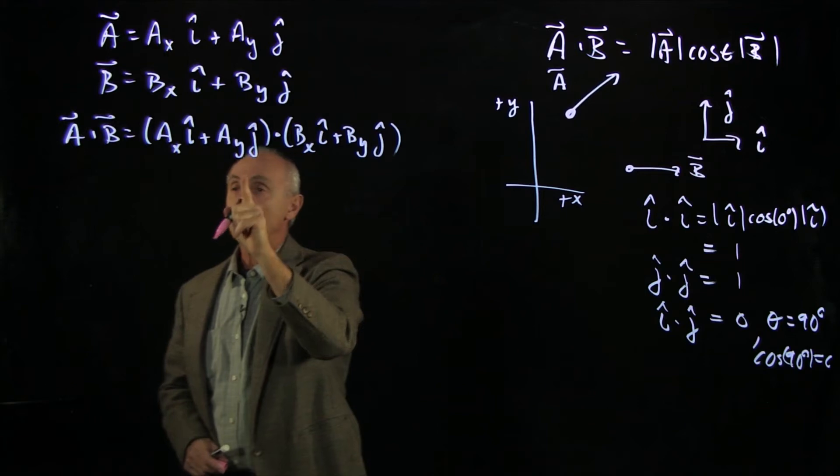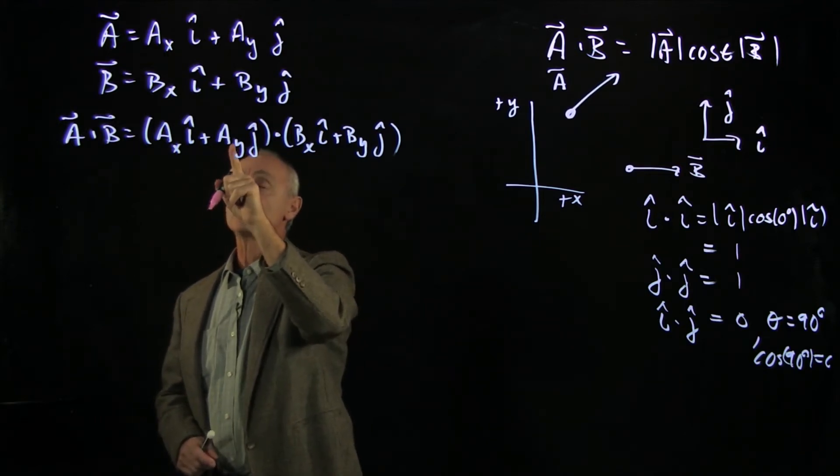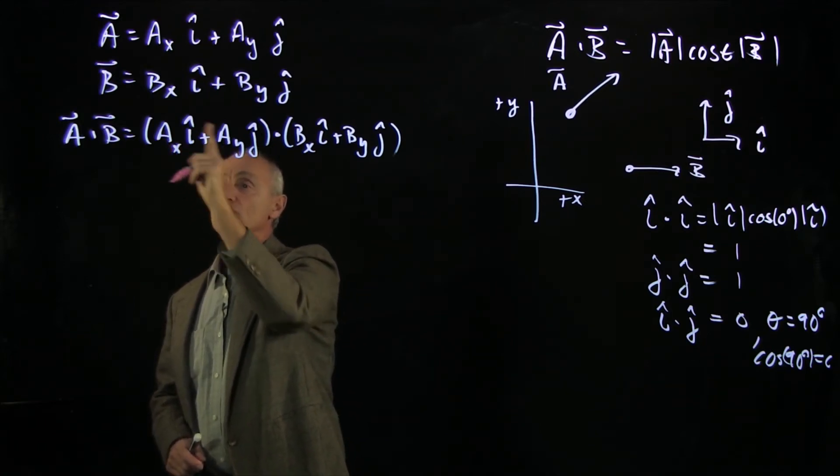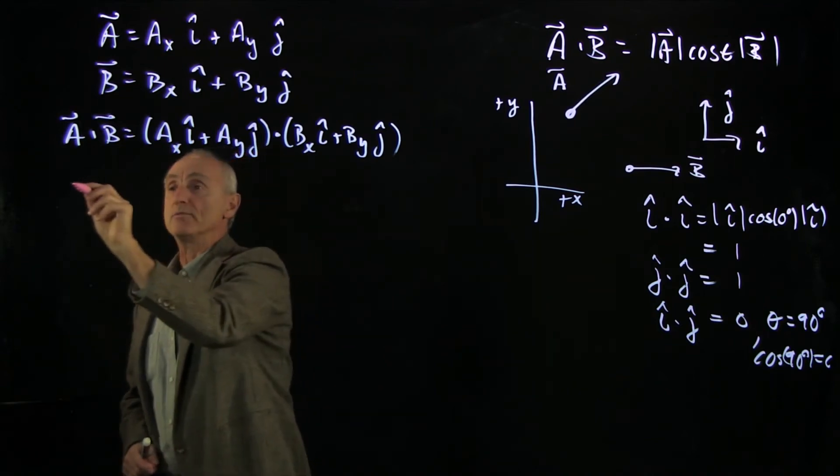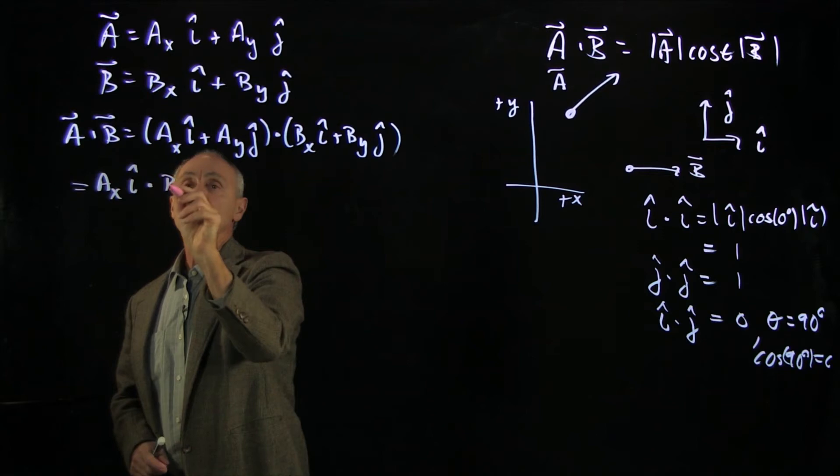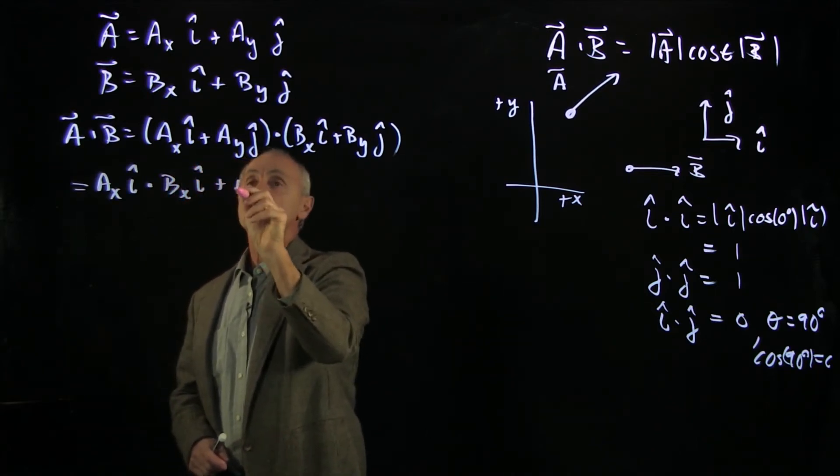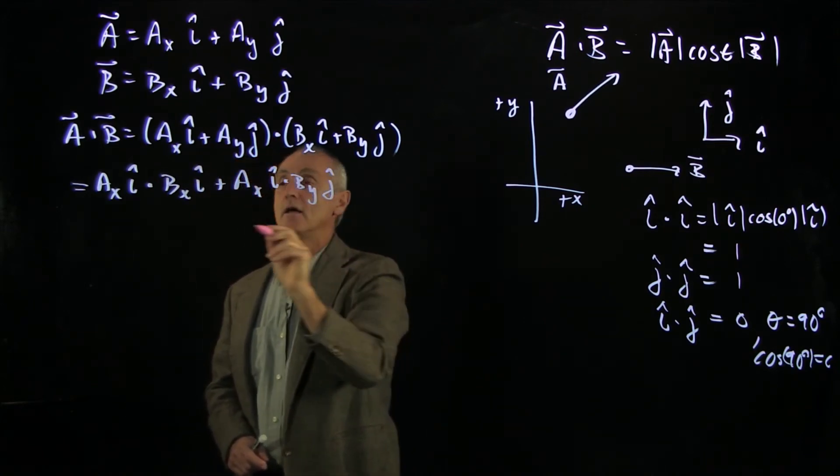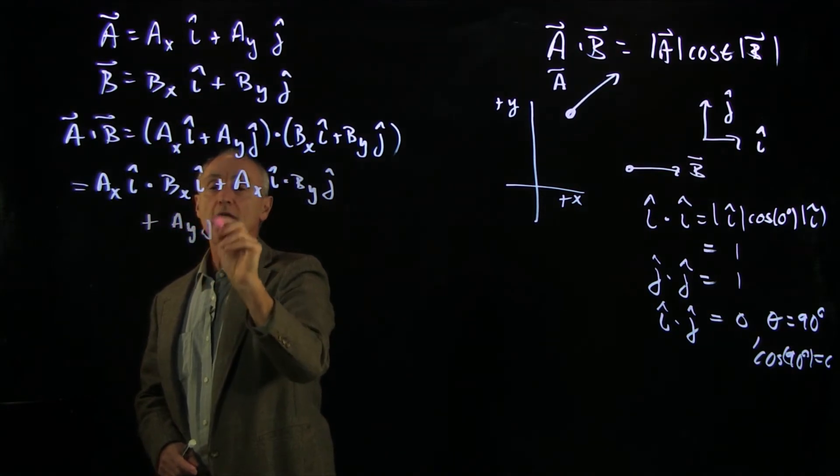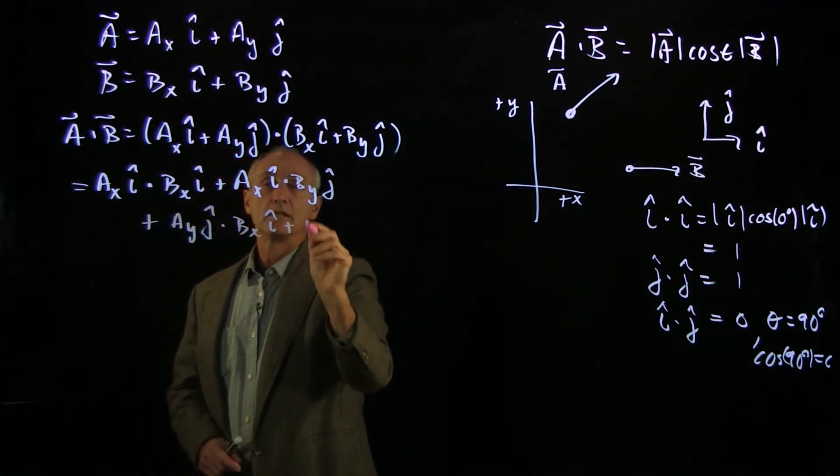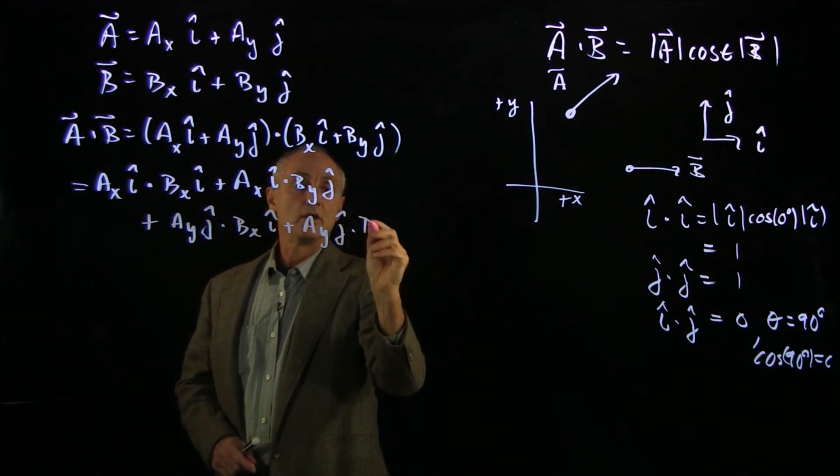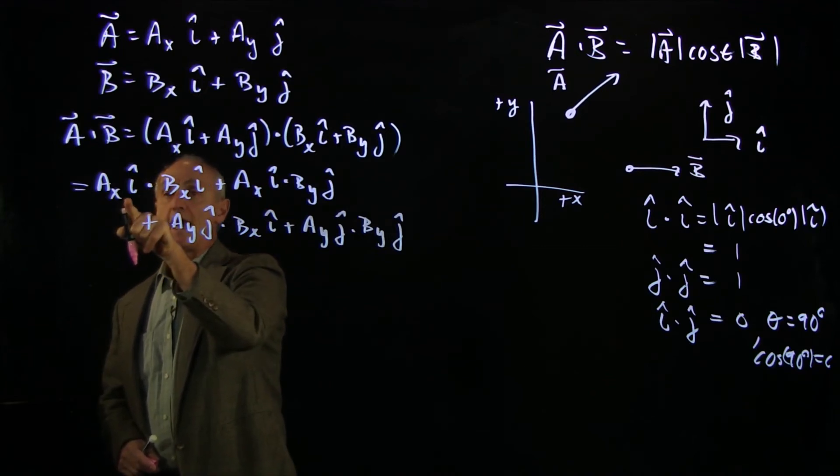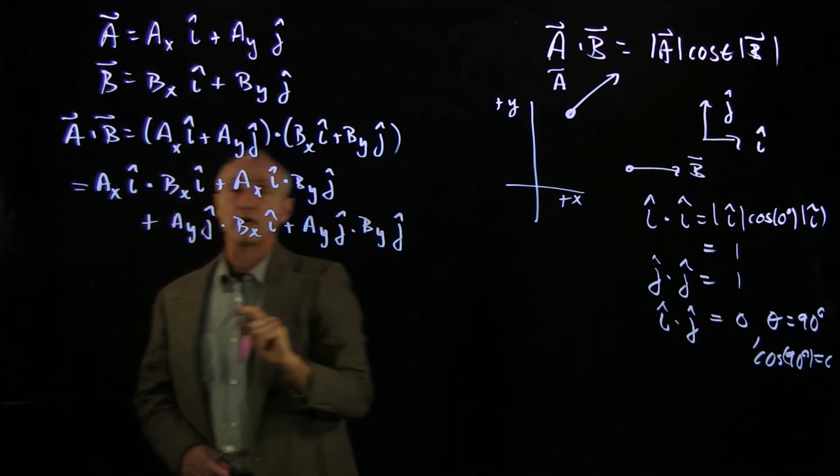Notice that we've already shown that the dot product distributes over vector addition. And also, if you multiply a scalar by a vector, you can pull the scalar out. So there's four terms here: ax i hat dot bx i hat plus ax i hat dot by j hat plus ay j hat dot bx i hat, this is a little tedious to write out, plus ay j hat dot by j hat. And now, because these are scalars, we can pull them out.